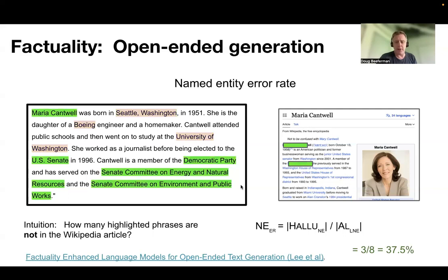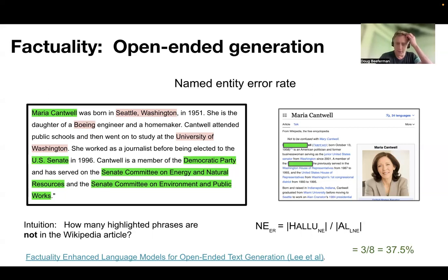So in this case, the set of things that were not in the Wikipedia article were like Seattle, Washington, Boeing, University of Washington. So we get a hallucination rate of 37%. Now, it's an imperfect metric, because the truth document — in this case the Wikipedia article — might incidentally mention things like Boeing in Seattle. And in fact, since she's from Washington, there's some reason to think that's more probable than chance. That's indeed related to why language models do these hallucinations in the first place. But over a large number of these kinds of probes, the expectation is that this metric will correspond to more grounded measures of factuality, and we'll see a little bit of evidence of that in a later slide.